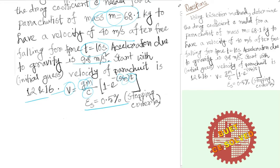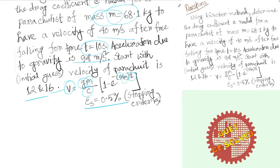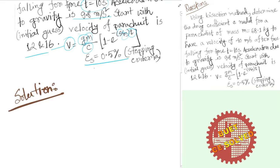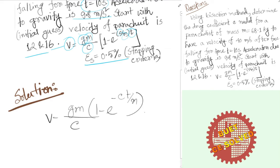I am going to use the initial guesses and CR values to find the root of the equation. We need to reformulate the equation. The function is: f(c) = v minus (gm/c) multiplied by (1 minus e to the power negative ct over m). We transfer everything to one side so that f(c) equals zero.